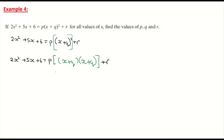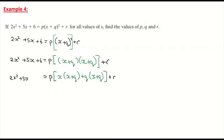Multiplying out: first term by second bracket gives x(x + q), plus q times the second bracket which is (x + q), all still inside the square bracket, multiplied by p, plus r. That equals 2x² + 5x + 6. Now expanding each pair: x by x, x by q, q by x, and q by q.